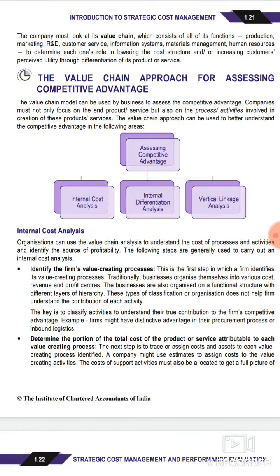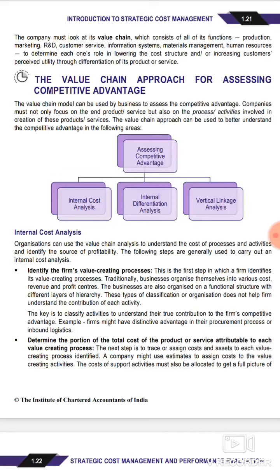You must identify whether there are links between one process and another, because processes are generally interdependent, not independent. Due to this interdependence, you cannot look at just one cost or apply the same percentage reduction across all departments. In some processes, you may need to reduce cost; in others, you may even need to increase or maintain cost — it must be customized process by process.